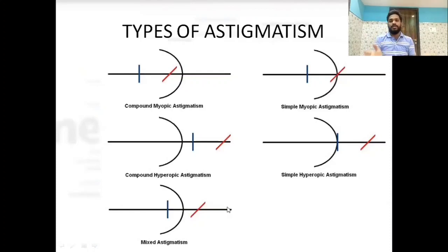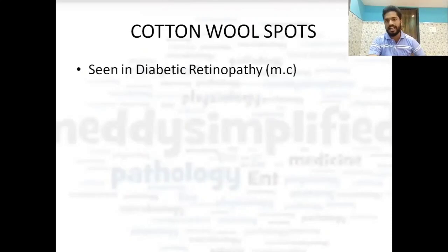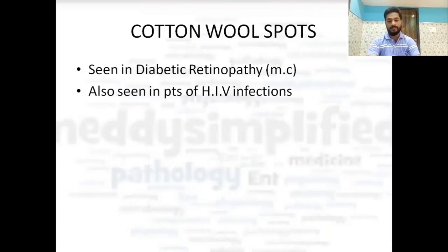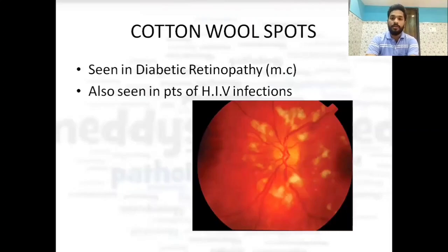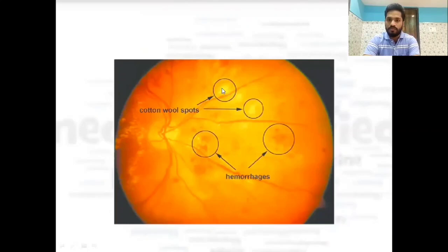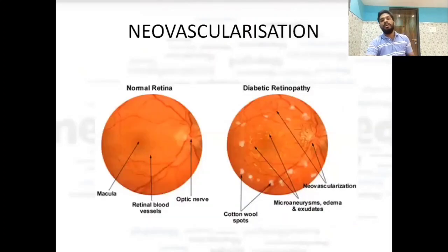Cotton wool spots are most commonly seen in diabetic retinopathy and also in HIV infection patients. This is how cotton wool spots look — different white patches resembling cotton wool. They can be confused with hemorrhagic spots — cotton wool spots are purely white whereas hemorrhages look red with some white.